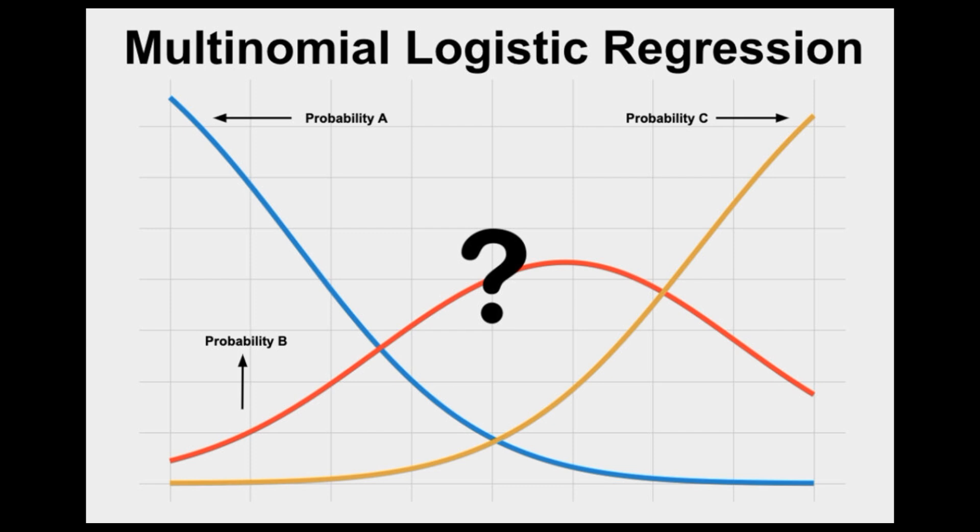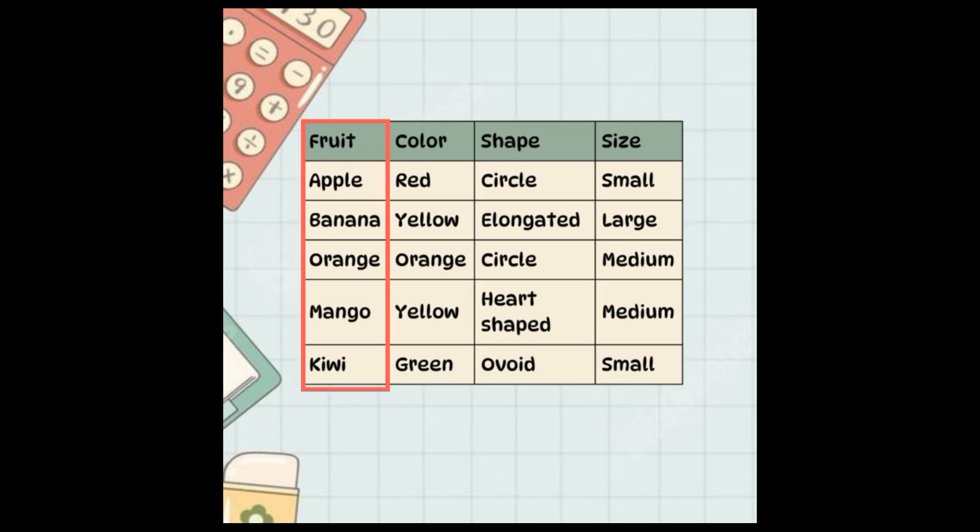Let us consider an example like predicting the type of fruit: apple, banana, or orange, based on its color, shape, and size. Multinomial logistic regression allows us to simultaneously model the probability of each class based on its attributes.